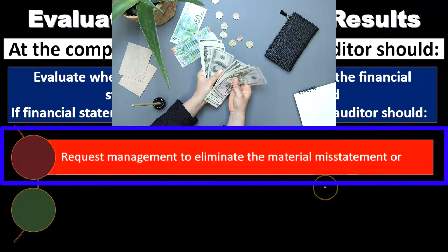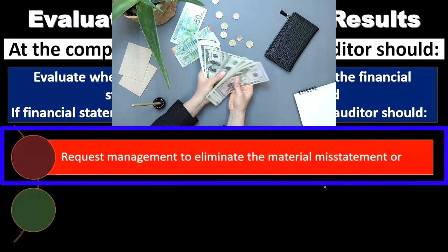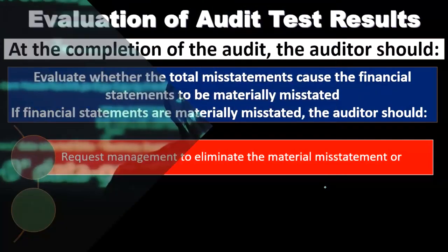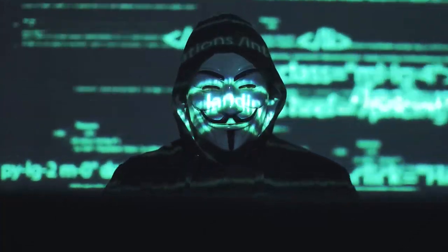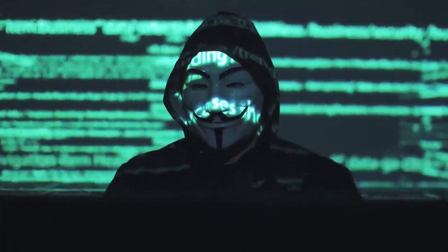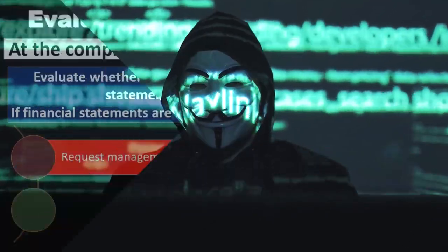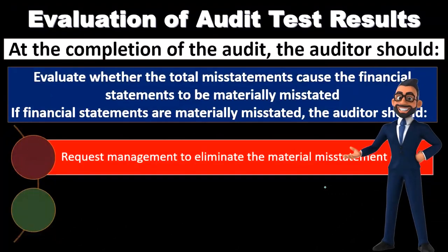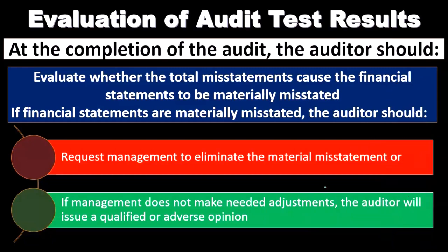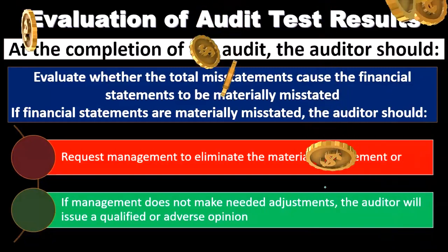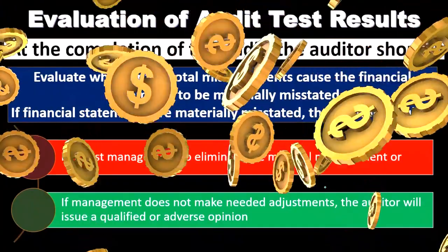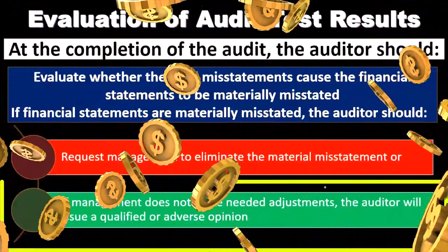If we see a material misstatement, it could be an error rather than fraud. We can say we would like you to correct this, eliminate the material misstatement, and make the adjustment needed to be in accordance with generally accepted accounting principles, so that we can give an opinion that the financial statements are represented in accordance with generally accepted accounting principles.